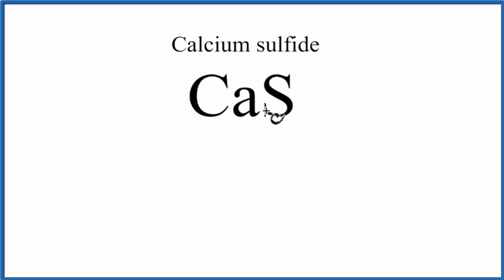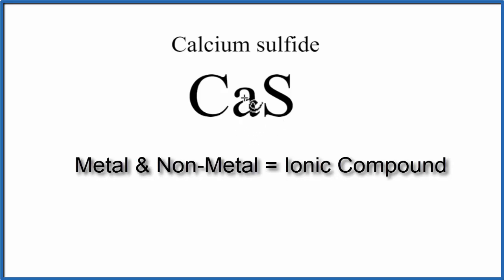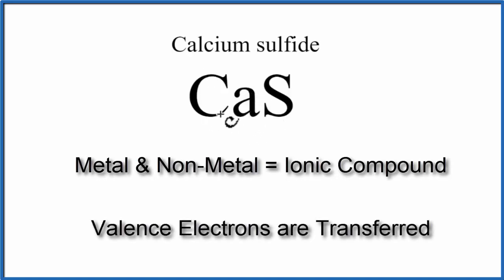Calcium is a metal, and sulfur is a non-metal. We have a metal and a non-metal, so we have an ionic compound, and the electrons will be transferred from the metal to the non-metal.